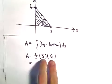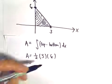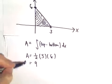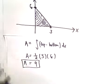So we'll get 3 times 6, which is 18 over 2, that'll give us 9. So now we have that A equals 9.